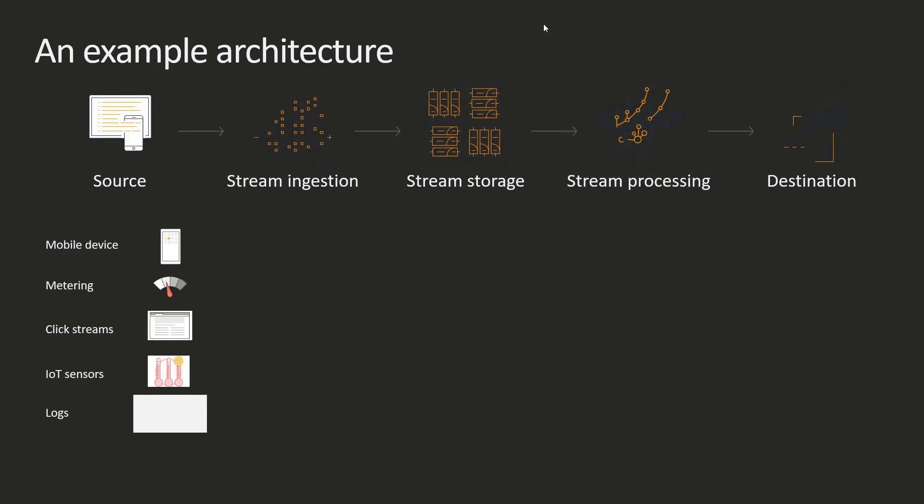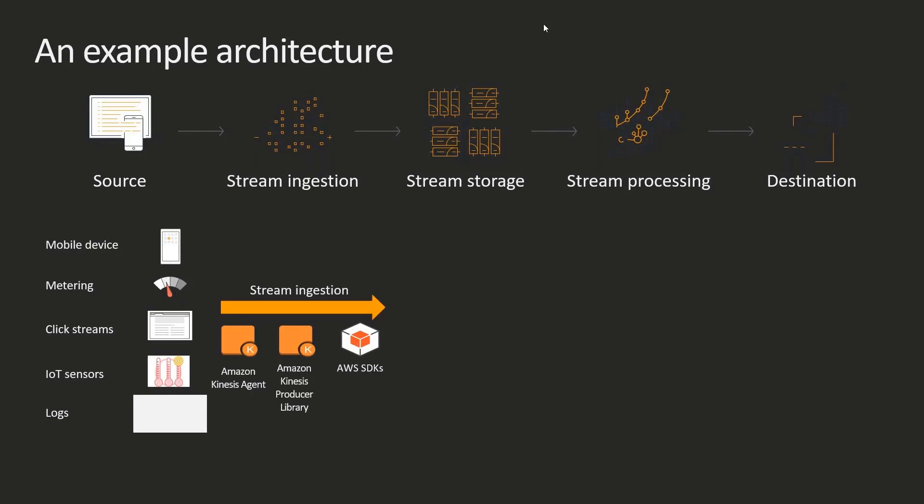Let's say we're collecting data from all of these sources — all the way from mobile devices to application logs. For ingesting this data, you could use the Amazon Kinesis Agent, which you install on your EC2 instances where your applications are hosted. Without any code, it can take application logs and send them on to the stream storage layer, Kinesis in this case. Another approach is to use the Kinesis Producer Library for clickstream or IoT sensor data. We also have a variety of SDKs for all programming languages — Python, Java, C#, etc. — to send data to Kinesis.